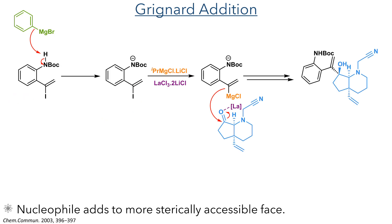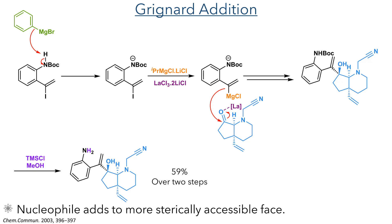This ketone was then reacted in a Grignard addition. An N-Boc-protected aniline bearing a vinyl iodide group is first deprotonated with phenyl magnesium bromide, and then turbo Grignard and lanthanum trichloride are added. The isopropyl magnesium chloride undergoes transmetallation with the vinyl iodide, forming the Grignard reagent, while the lanthanide coordinates to the carbonyl, making the ketone more electrophilic. The Grignard adds to the more sterically accessible convex side of the molecule, forming the product as a single isomer. Deprotonation of the aniline proved essential, as no addition was observed when only turbo Grignard was used. With the Grignard complete, the Boc group was then removed using TMS chloride and methanol, forming the target compound with a 59% yield over two steps.